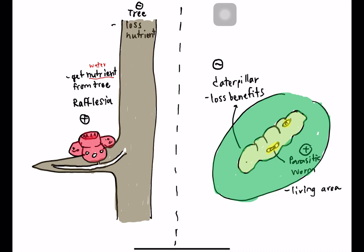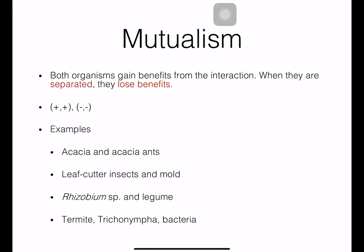The parasitic worm lives inside the body of the caterpillar, then gets out of the caterpillar's body and forms a pupa state, developing into an adult. The worm gets a living area with food, but the caterpillar loses benefit because it loses nutrients. The parasite does not immediately kill the caterpillar, but the caterpillar may die later because it doesn't have enough food to develop into the pupa form.